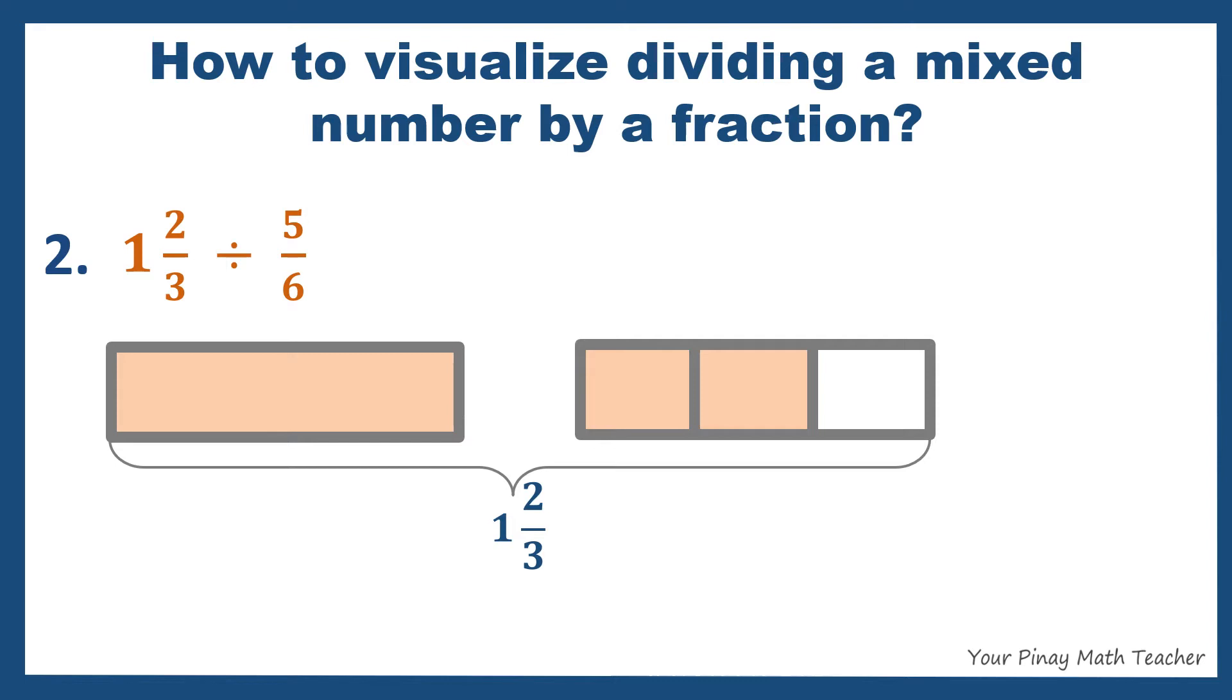Example 2: 1 and 2 thirds divided by 5 sixths. This expression answers the question, how many 5 sixths are there in 1 and 2 thirds? Our last hole is divided into 3 equal parts. So let us also divide the first hole into 3 equal parts.